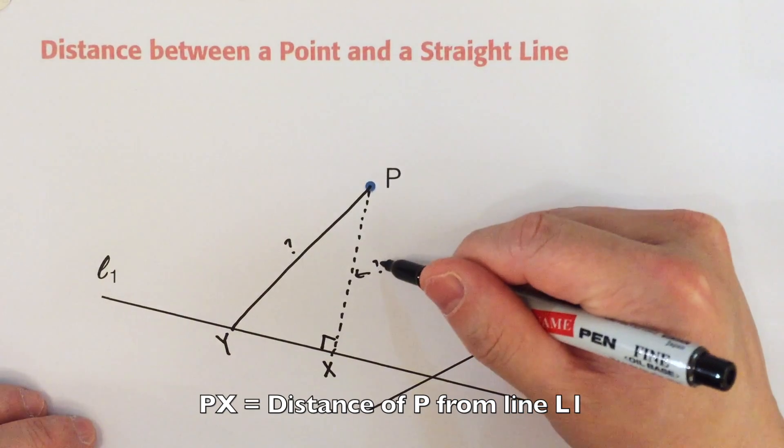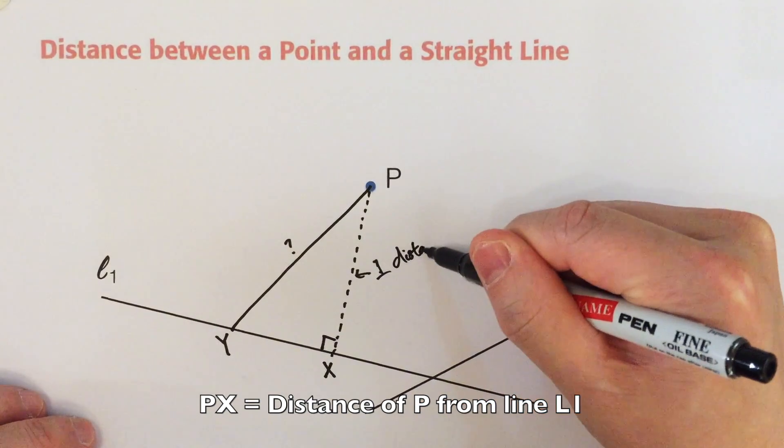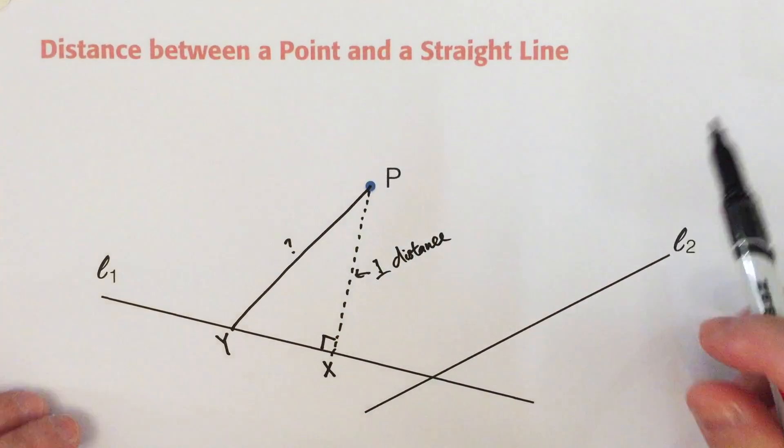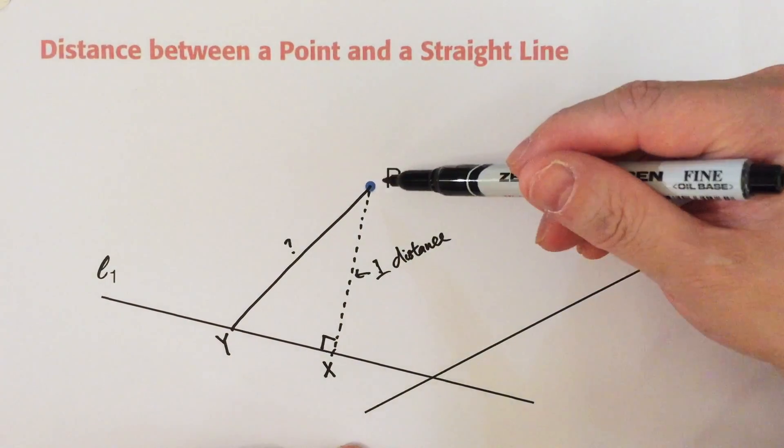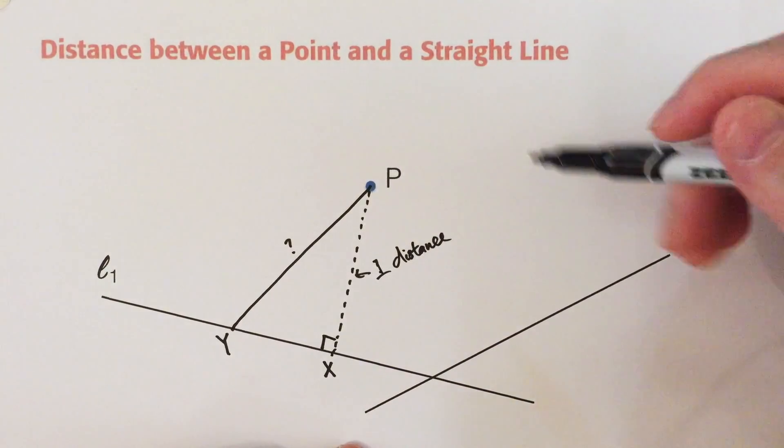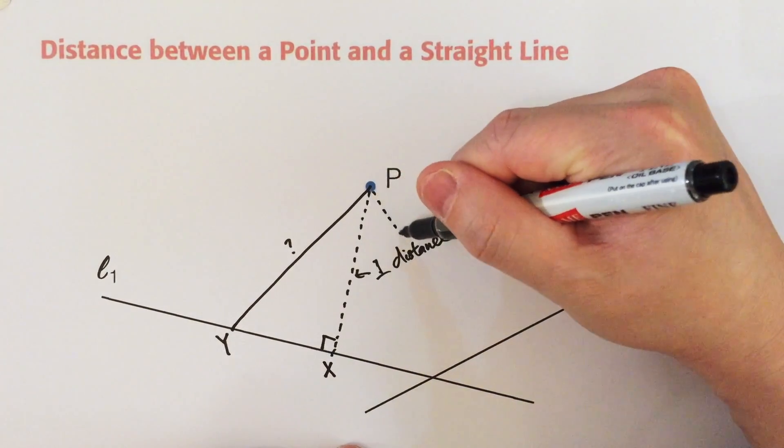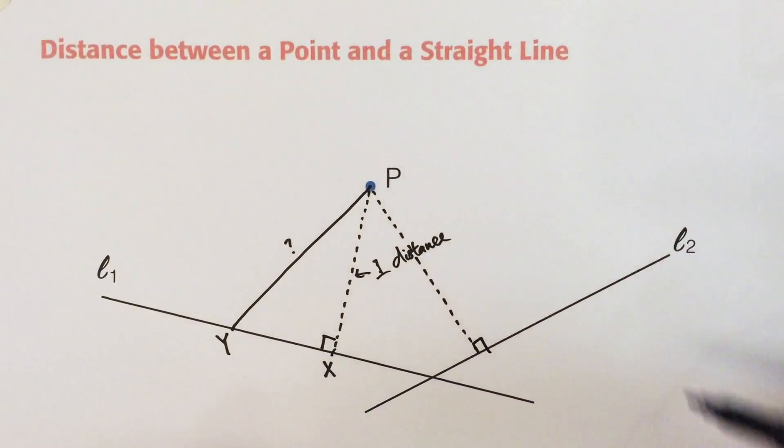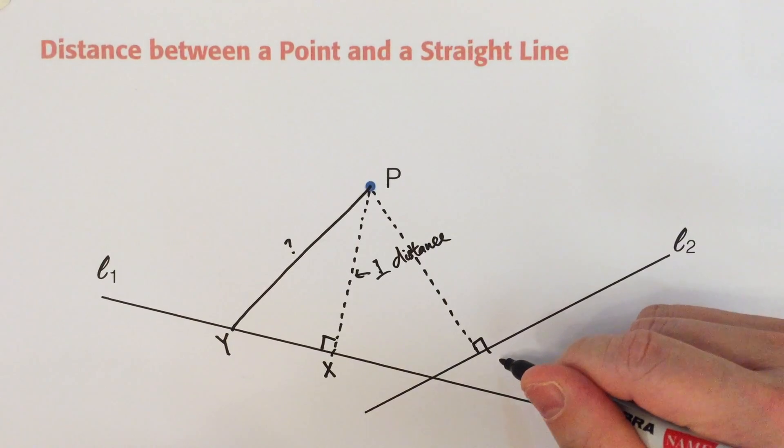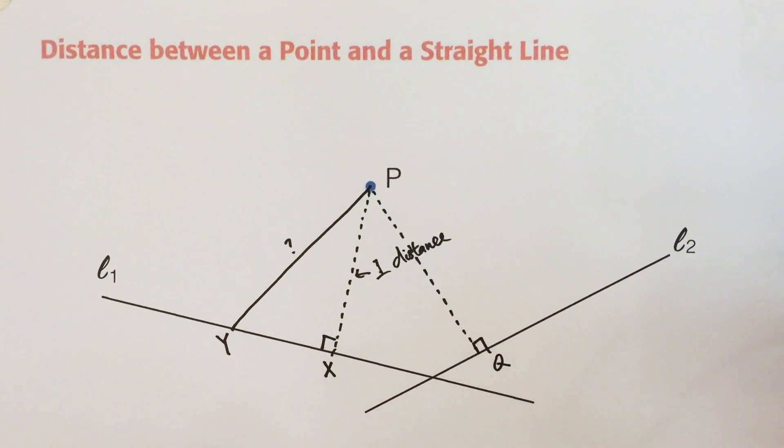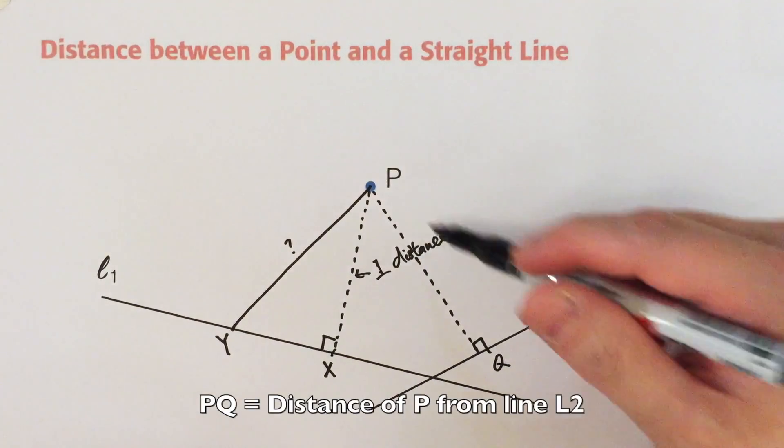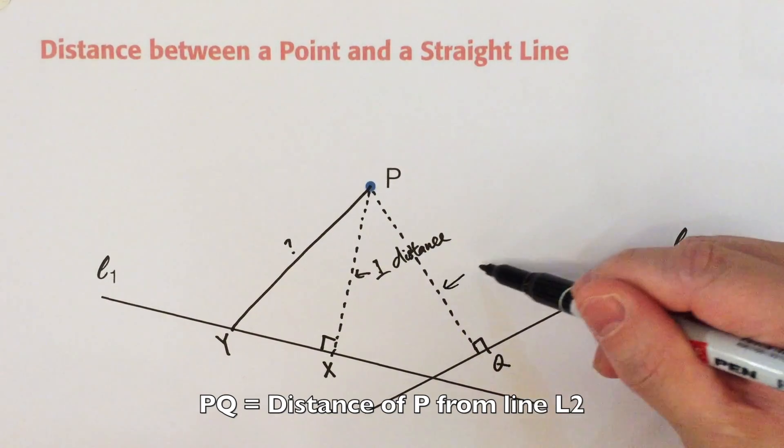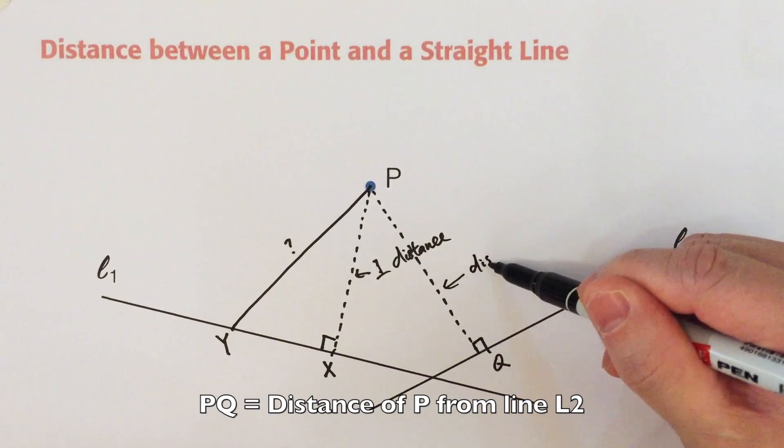So of course, this will be the perpendicular distance of point P from the line L1. And let's say for L2, point P, the distance of point P from L2 will be - we draw another perpendicular line to L2. Let's call this point Q. PQ should be perpendicular to L2, so this is the required distance.